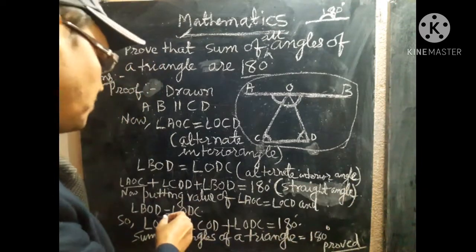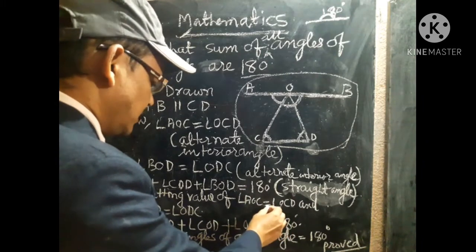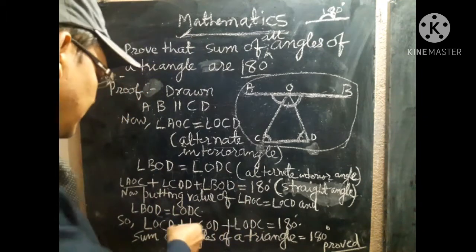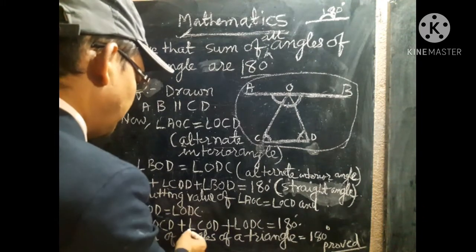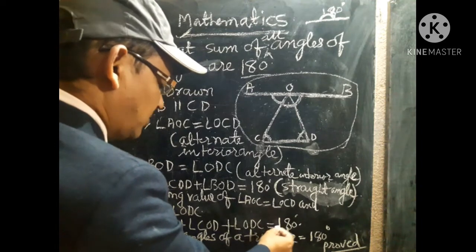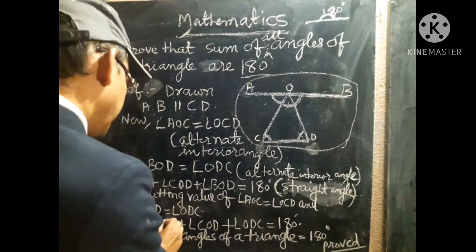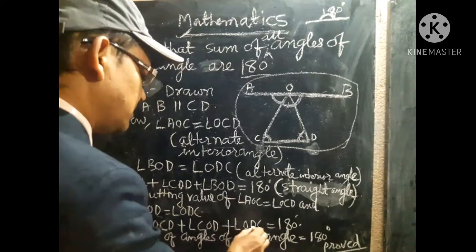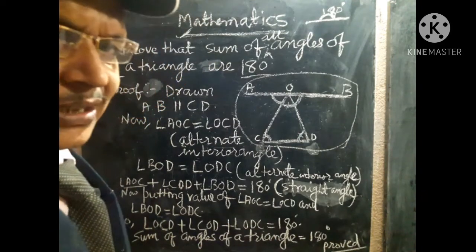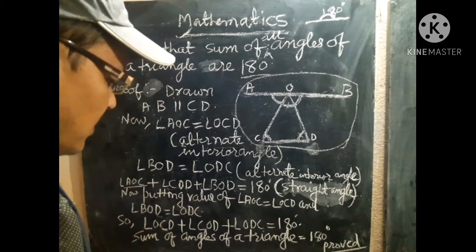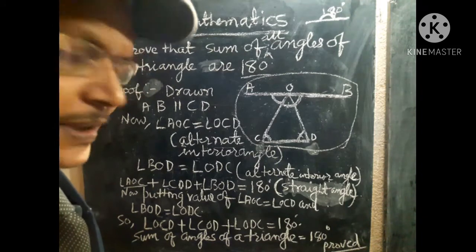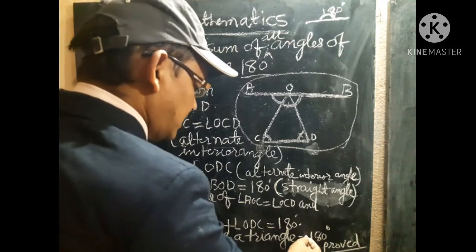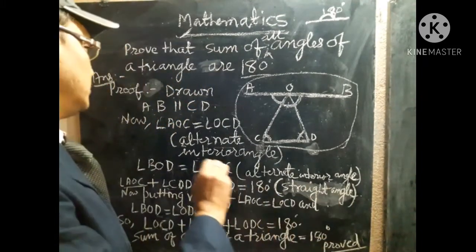Now putting in the values: angle AOC equals angle OCD, and angle BOD equals angle ODC. So we get angle OCD plus angle COD plus angle ODC equals 180 degrees. This means angle C plus angle O plus angle D equals 180 degrees — the sum of angles of the triangle. This is proved. This is the first method.